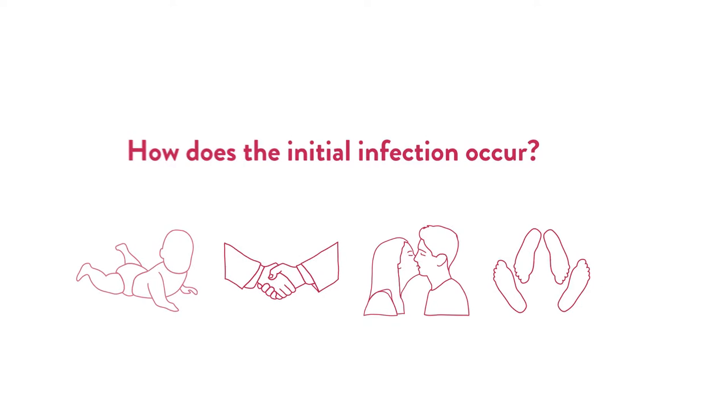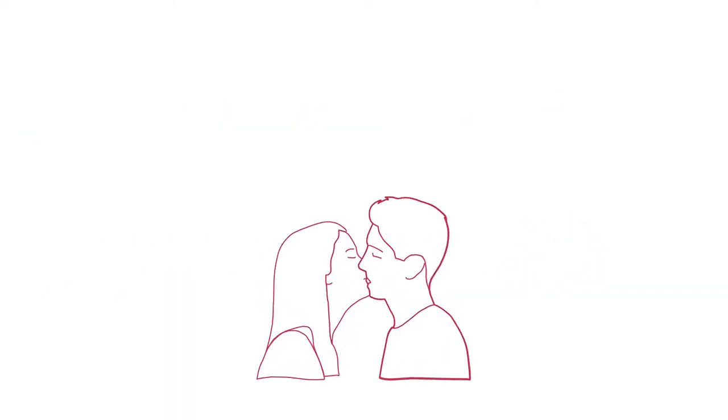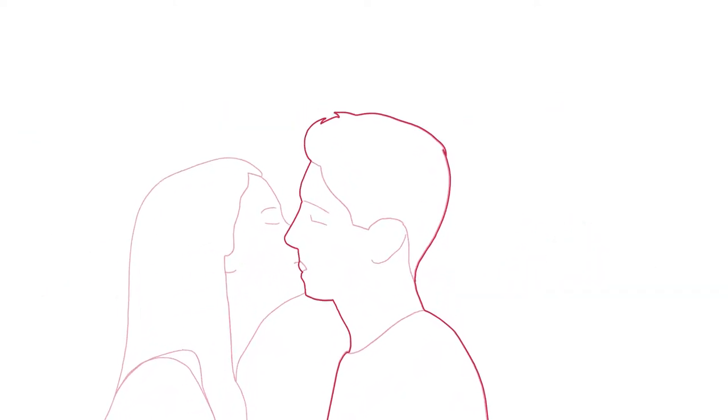The initial infection usually shows no symptoms and only appears subsequently in the form of vesicles and blisters.